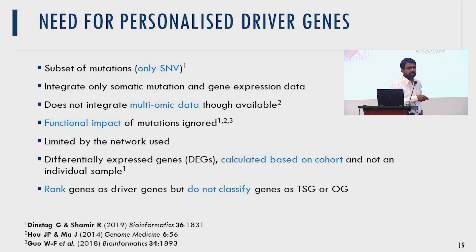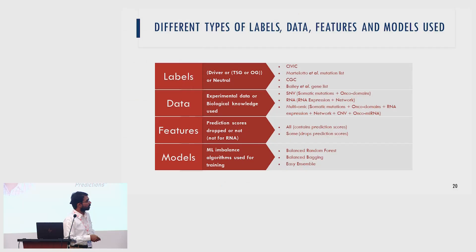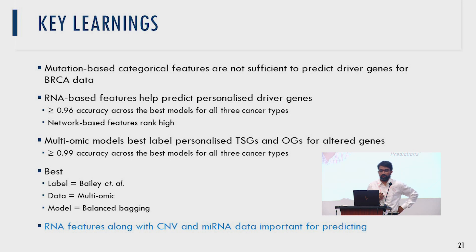Many tools rely heavily on genomic data, but today we also have transcriptomic data, proteomic data, and network data that have not been fully leveraged. We tried to include all of these. Additionally, existing tools rank genes as driver genes but do not typically classify them by functionality as tumor suppressors or oncogenes, which is critical for understanding disease etiology. We used features from several studies including somatic mutation data, RNA expression data, and applied algorithms like balanced random forest and balance bagging.